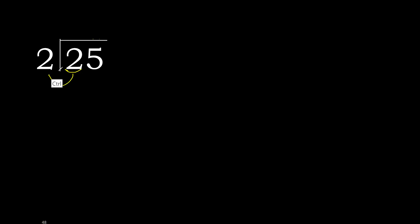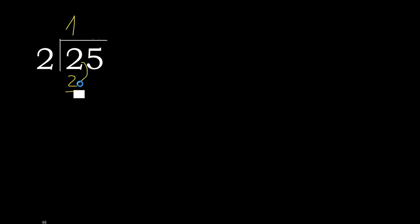25 divided by 2. 2 is not less, therefore we start with 2 here. 2 multiplied by which number is nearest to 2 but not greater? 2 multiplied by 2 is 4, which is greater. 2 multiplied by 1 is 2, which is not greater. 2 minus 2 equals 0. Next digit.